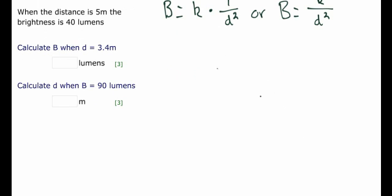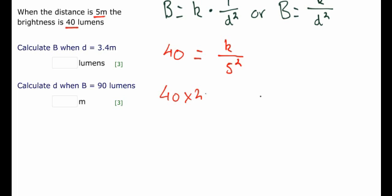So what can we do with this? We are given that when the distance d is 5, the brightness is 40. So we can work out k, and then use k to work out any other situation. First we need to find k. So: 40 lumens equals k divided by 5 squared. To get k on its own, we need to multiply across by 5 squared. Now 5 squared is 25, so we have 40 times 25 equals k. In this case, k turns out to be 1,000.